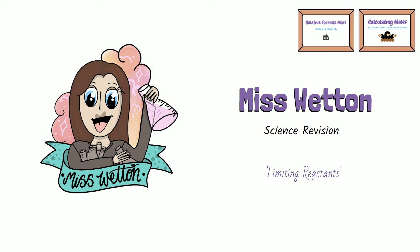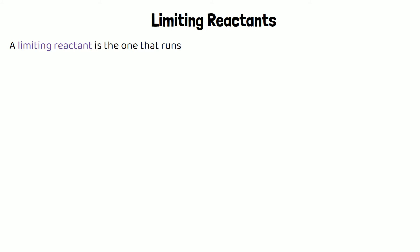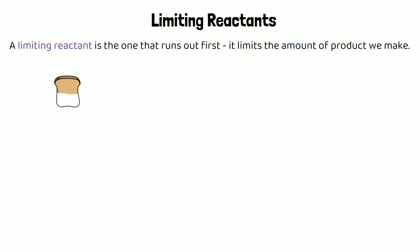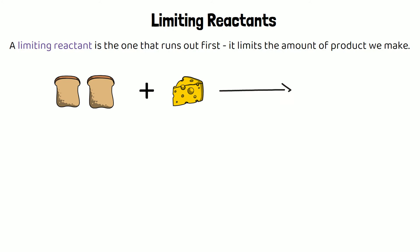A quick reminder of what a limiting reactant actually is: the limiting reactant is a reactant in a chemical reaction that will run out first and be used up first. Because it runs out first, it's going to limit the amount of product we can make.